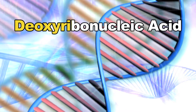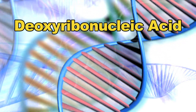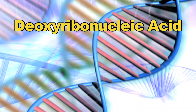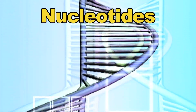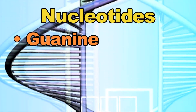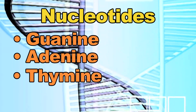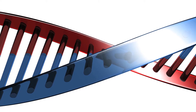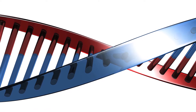DNA, or deoxyribonucleic acid, is the genetic blueprint of all living organisms, including some viruses. It is made up of four nucleotides: guanine, adenine, thymine, and cytosine. DNA is organized into a double helix formation, which forms the chromosome.